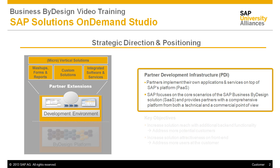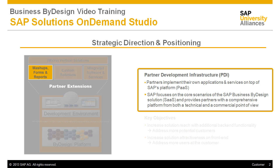As you can see in the upper area of the graphic, SAP categorizes different partner extensions. First, we have mashups — these are more front-end oriented solutions that can either be done with the key user tools or with the SDK. As an example, you could imagine a Google Map that is linked to the address data of a business partner, and this integrated solution will then be displayed in the business partner view.